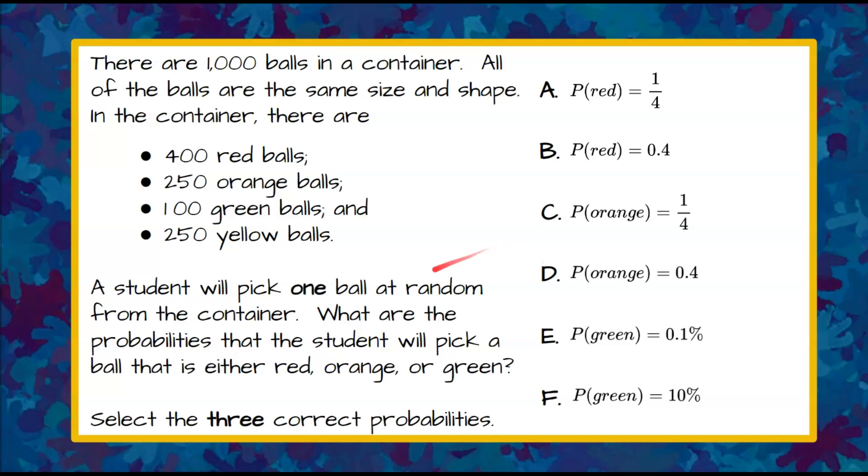Welcome back. First we need to know that we have to pick three of these answers. There's six and three of them are correct. We need to understand that if we add up all four of these colored balls that's 1,000 just like we were given.